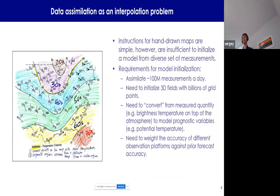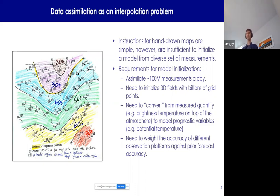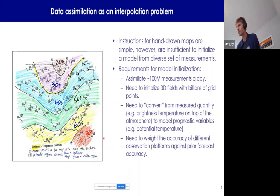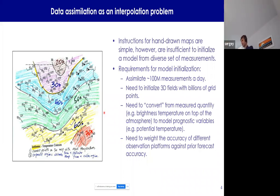A bit more about data assimilation as an interpolation problem. Here is a hand-drawn map from an undergraduate course with simple instructions: connect points with equal temperatures, separate warmer from colder regimes. You color in areas at 30 degrees in purple, areas at 40 in dark blue, and so on. That seems pretty simple.